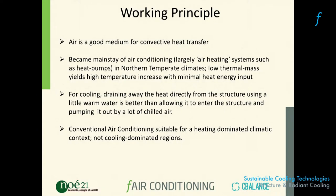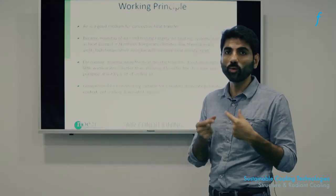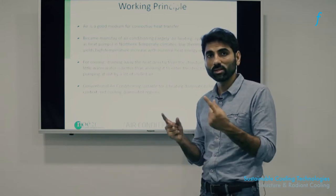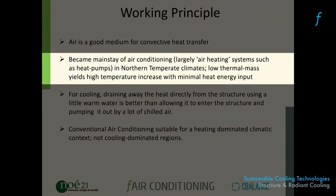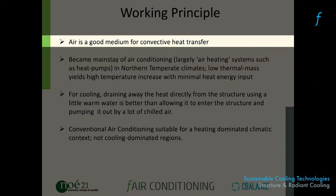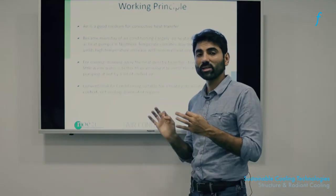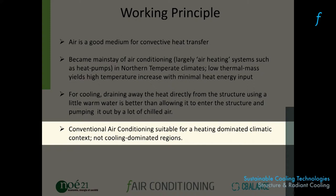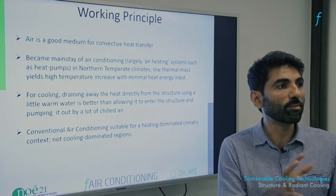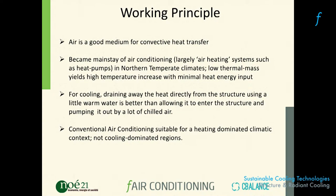The reason air became a mainstay of air conditioning was because it was an efficient medium to heat quickly without much energy in the West, where air conditioning was invented for heating spaces. However, air is not an effective medium for cooling because you need large volumes thrown on the body. Air conditioning is a classic case of a good technology used in the wrong situation. Structure and radiant cooling are a climate-appropriate, region-appropriate technique for cooling people in tropical places, draining heat rather than pumping it.